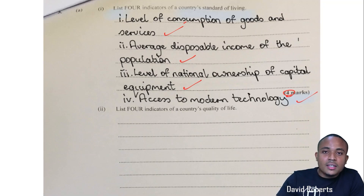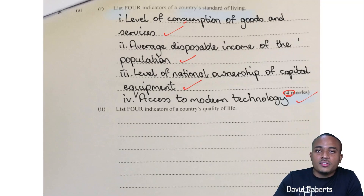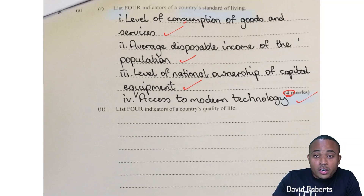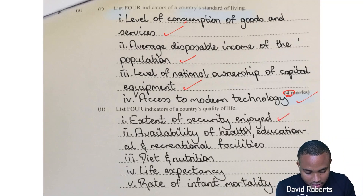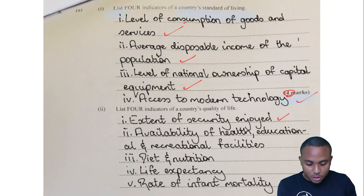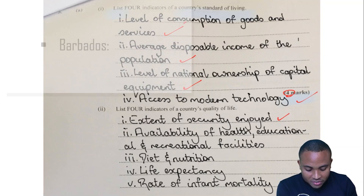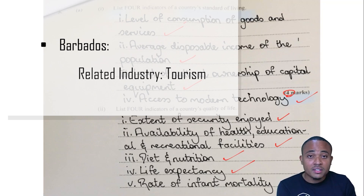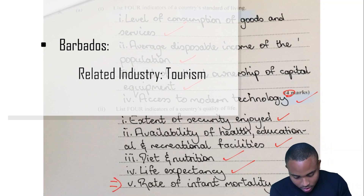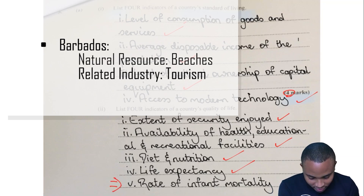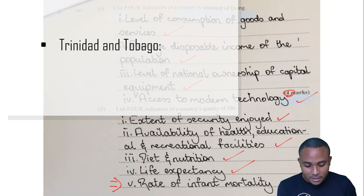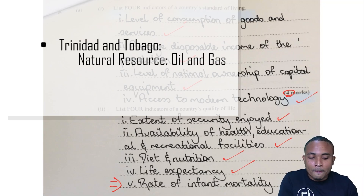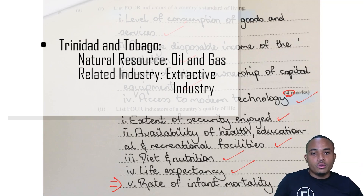Part two: list four indicators of a country's quality of life. The indicators are: the extent of security enjoyed, availability of health, educational and recreational facilities, diet and nutrition, life expectancy, and as a bonus — rate of infant mortality. Again, this is straight from the syllabus, so it is important to know.